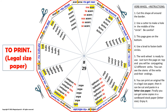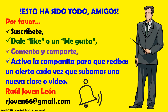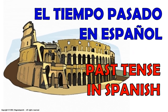Thank you. My name is Raúl Joven León. Mi correo electrónico personal: rjoven66 arroba gmail.com. Tiempo pasado, verbos irregulares, video número 29. Cambio de C a QUE. El tiempo pasado en español.